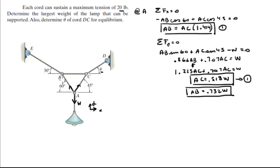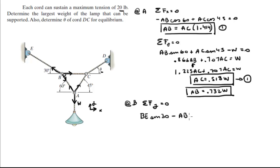Now at B, we have tension AB going down, tension BC going straight to the left, and tension BE going up toward the left. We know the angle is 60, and if this angle is 60, that means this angle right here is also 60. At B, the sum of the forces in the Y is equal to 0, so BE times the sine of 30 minus AB times the sine of 60 equals 0. We already know AB, so plugging it in we get BE equal to 1.268 times the weight.